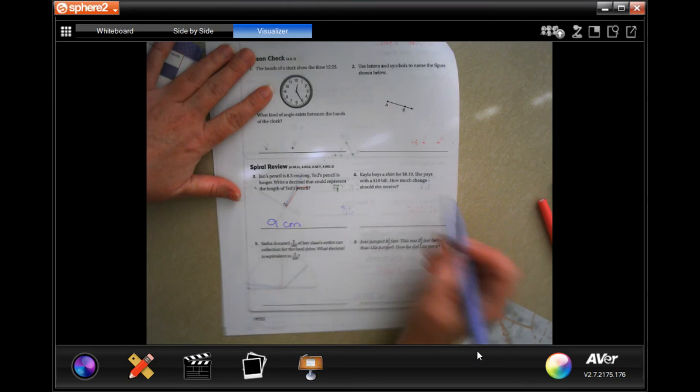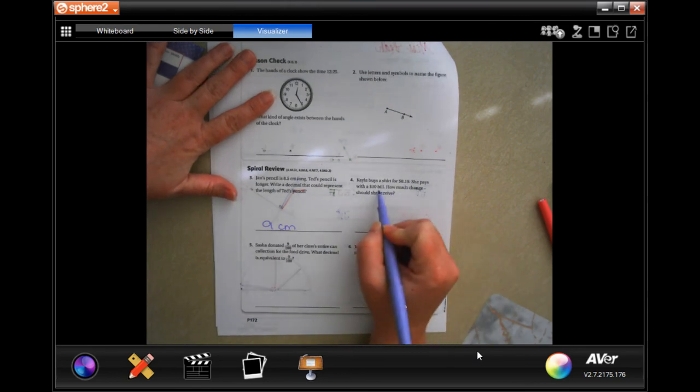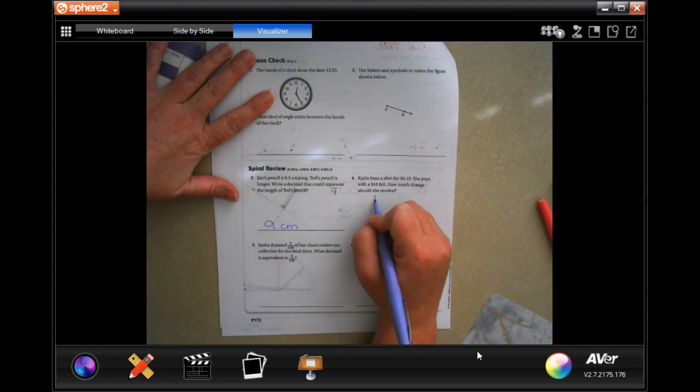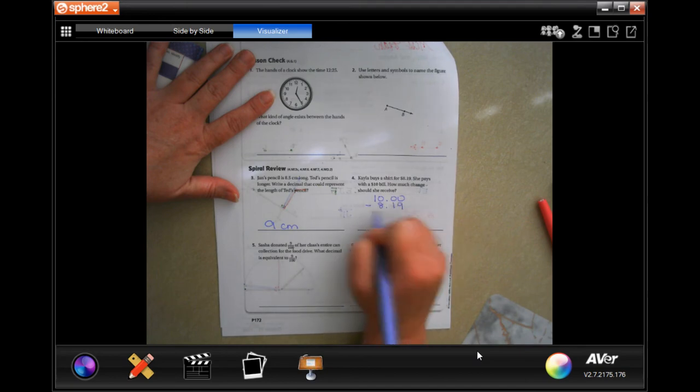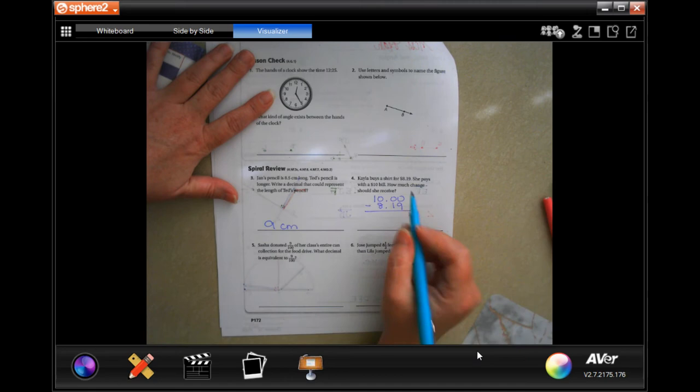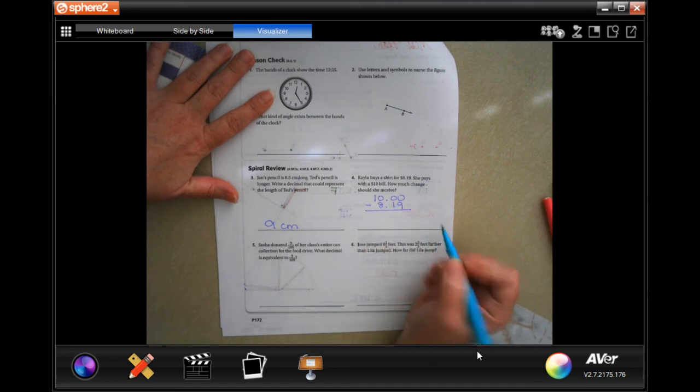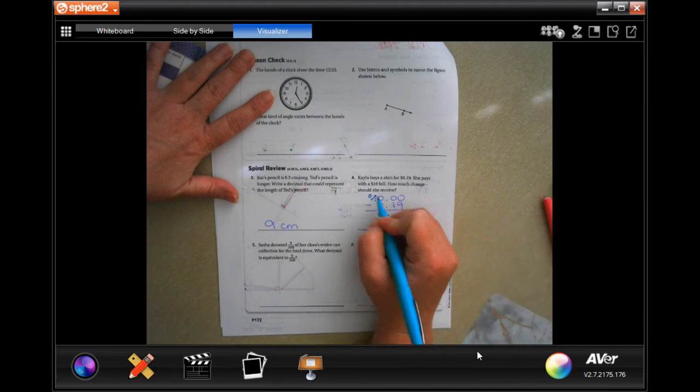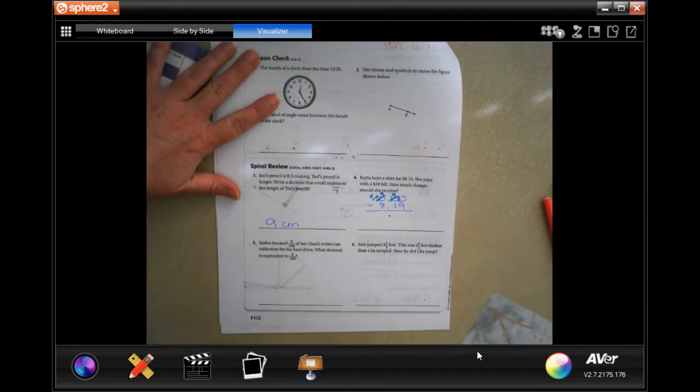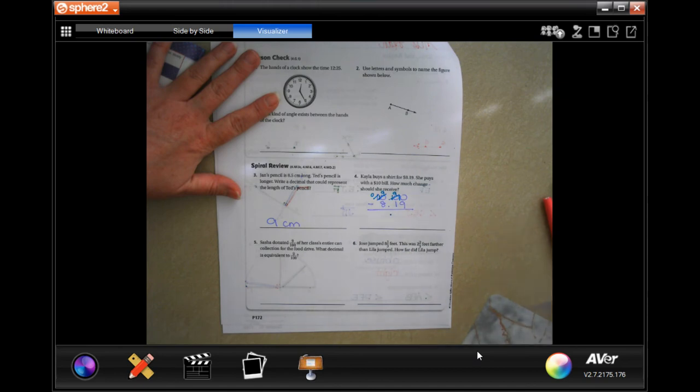Kala buys a shirt for $8.19. She pays with a $10 bill. How much change should she receive? Well, $10 minus $8.19. None of those zeros can take away the whole numbers underneath them, so drop my decimal first. I'm going to borrow, making it 10, 9, 10. Now I have 10 take away 9 which is 1, 9 minus 1 which is 8, 9 minus 8 which is 1. Don't forget to put a dollar sign in front of it, $1.81.